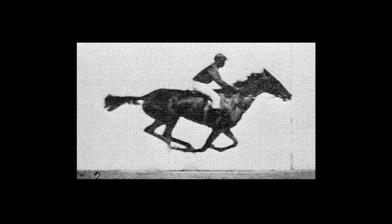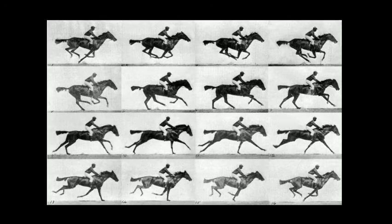Only when the horse's legs are tucked under him are they off the ground. Muybridge took a whole series of photographs all in a row, by setting up a row of cameras — each with a little string tied to it that stretched across the track. As the horse ran past, he would hit the string, triggering the camera to open the shutter and take a picture.